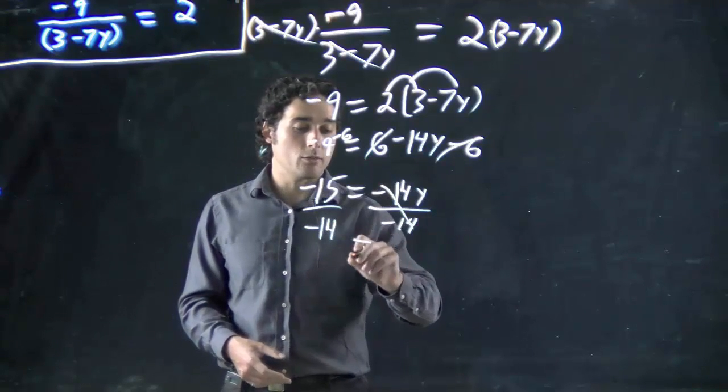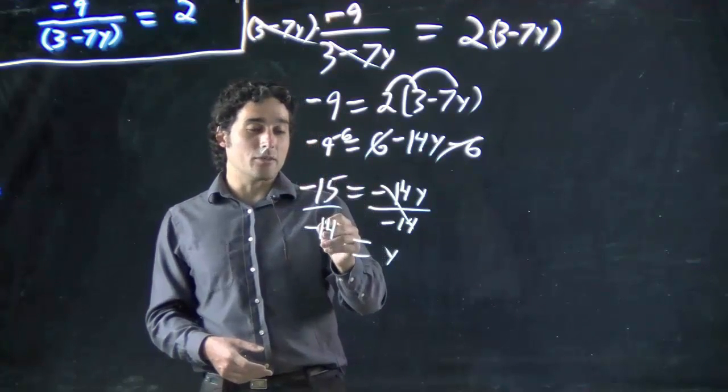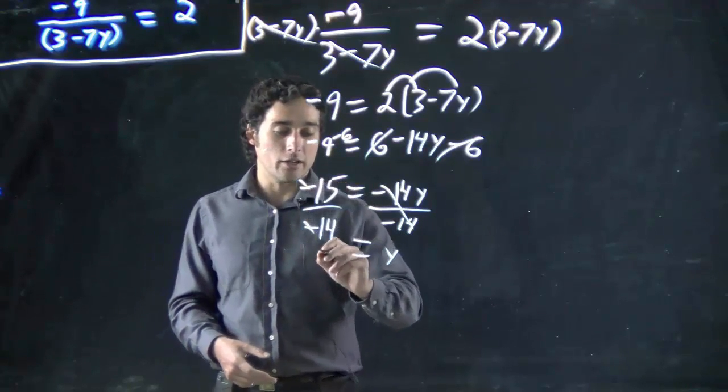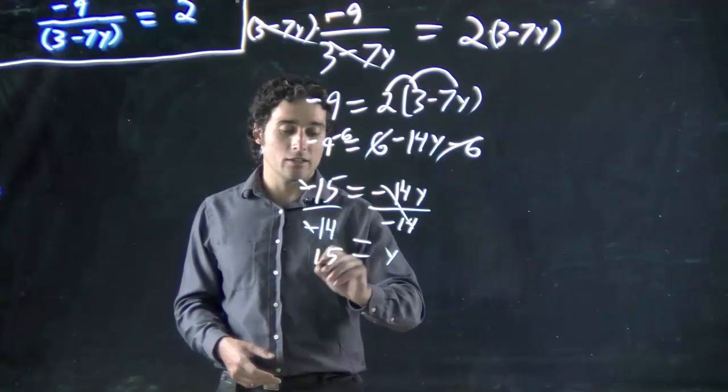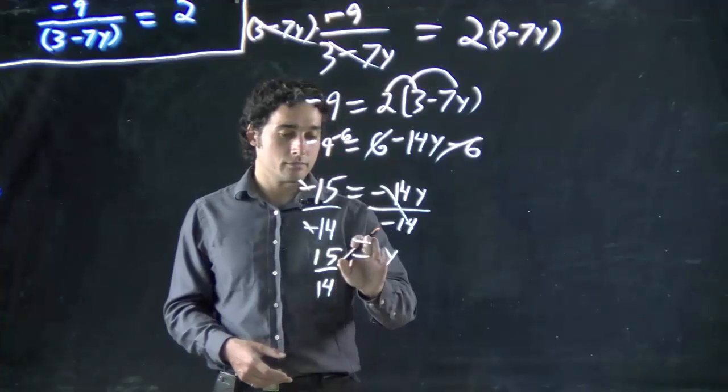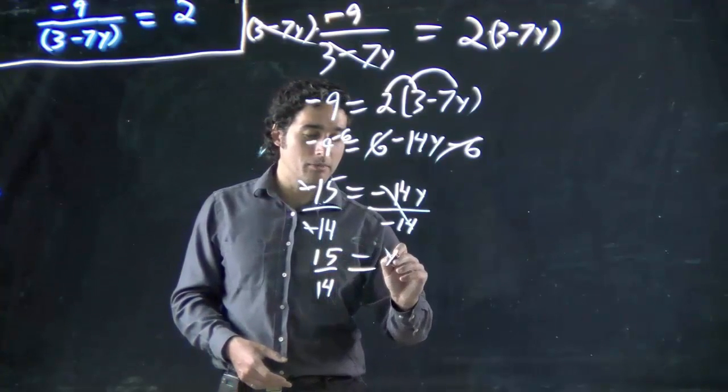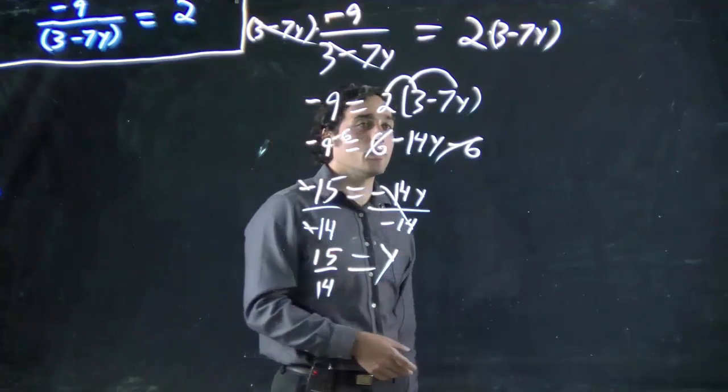And I'm left with y on this side equals, and remember, minus 15 over minus 14, the minuses will cancel. So in other words, I'm left with 15 over 14. And I can even clean it up, make the equal sign a little bit more lined up. y equals 15 over 14.